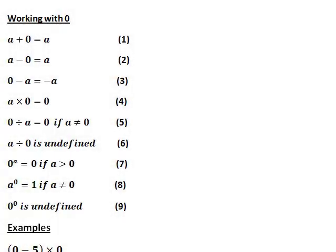In this recording we shall look at working with 0 in solving some arithmetic problems. The first few properties of 0 we will look at are properties 1, 2, 3, and 4 listed here. Namely, any number a plus 0 is a, and any number a minus 0 is a. That is, adding or subtracting 0 from a number will just give the number.